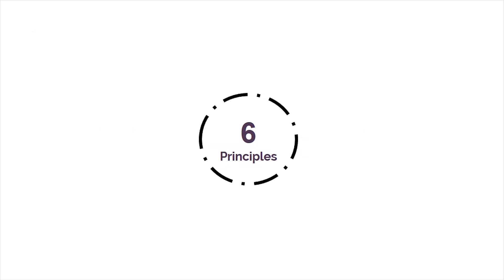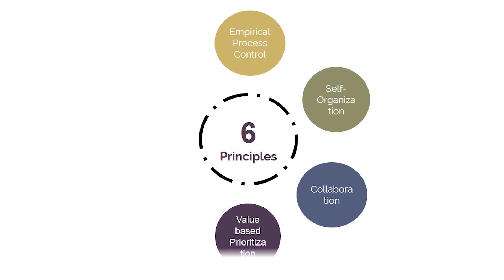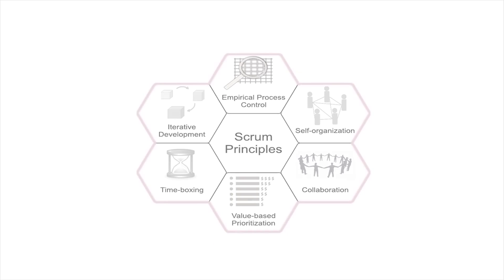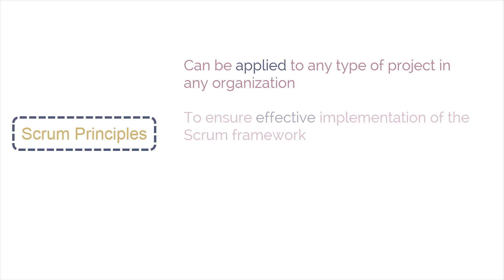The six Scrum Principles are Empirical Process Control, Self-Organization, Collaboration, Value-Based Prioritization, Time Boxing, and Iterative Development. You can see how they are arranged in this diagram. Note that Scrum Principles can be applied to any type of project in any organization and should always be followed in order to ensure effective implementation of the Scrum Framework.